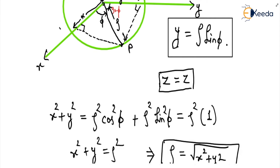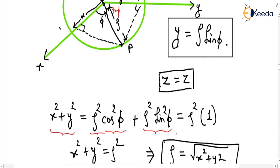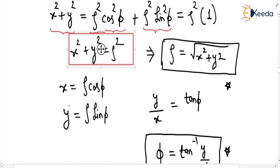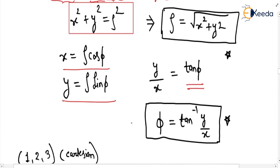Now if we compute x squared plus y squared, it will be rho squared cos squared phi plus rho squared sin squared phi. We can take rho squared common, and since cos squared phi plus sin squared phi equals 1, we get x squared plus y squared equals rho squared. So rho equals the square root of x squared plus y squared. Dividing y by x gives tan phi, so phi equals tan inverse of y over x.